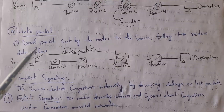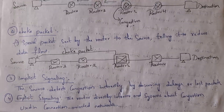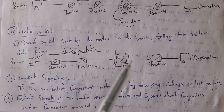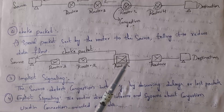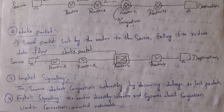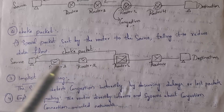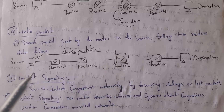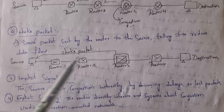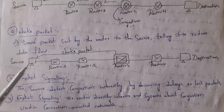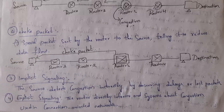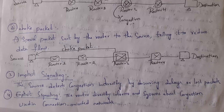The second one is choke packet. Whenever congestion occurs, the congested router will send a special packet to the source computer telling it to reduce data flow. So whenever the source computer receives a choke packet, it will start sending data very slowly. This is all about the choke packet technique.